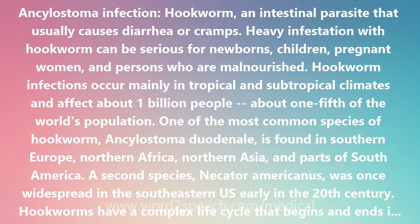Hookworm infections occur mainly in tropical and subtropical climates and affect about 1 billion people — about one-fifth of the world's population. One of the most common species of hookworm, Ancylostoma duodenale, is found in southern Europe, northern Africa, northern Asia, and parts of South America. A second species, Necator americanus, was once widespread in the southeastern U.S. early in the 20th century.